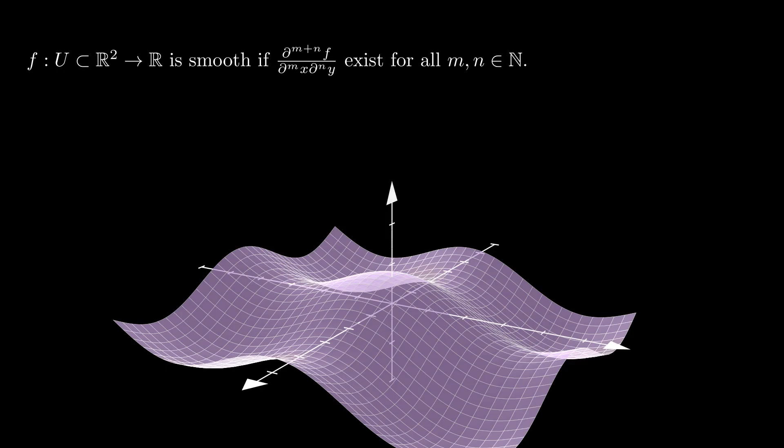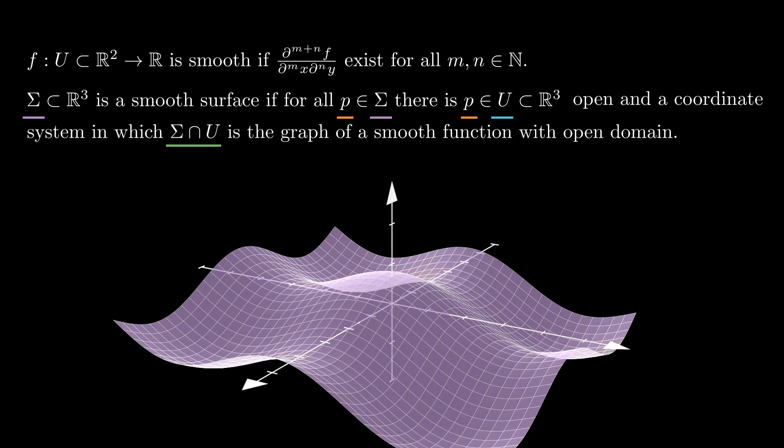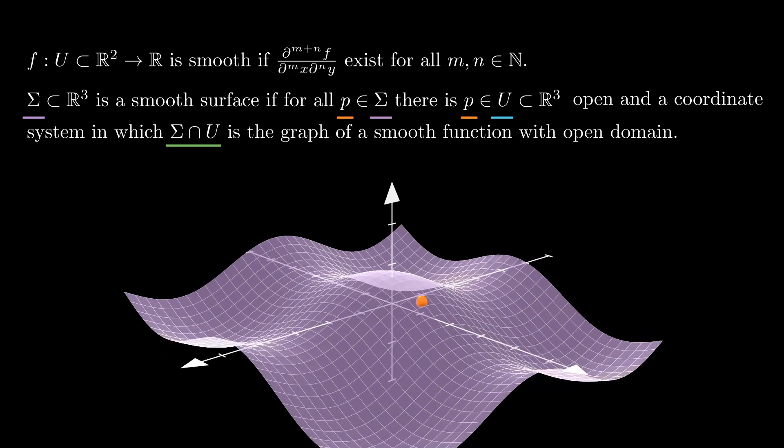Remember that a function f of two variables is called smooth if all its partial derivatives exist. More precisely, we say that a connected subset sigma of the three-dimensional space is a smooth surface if